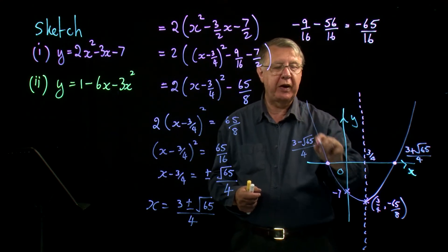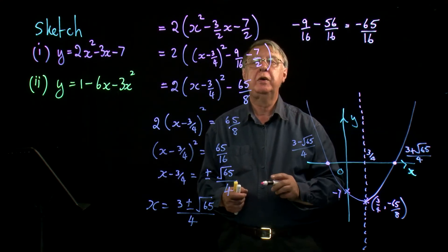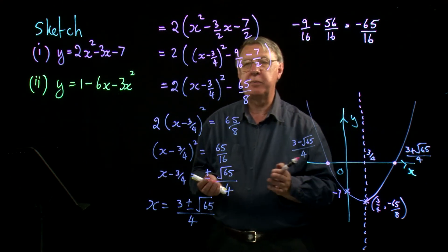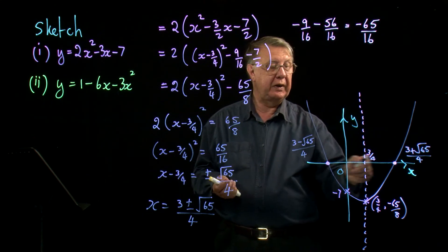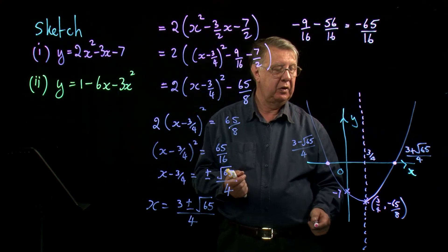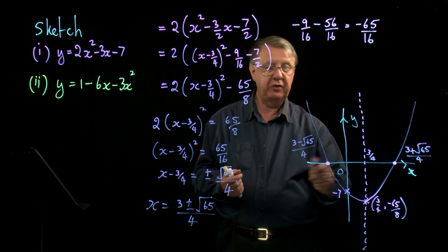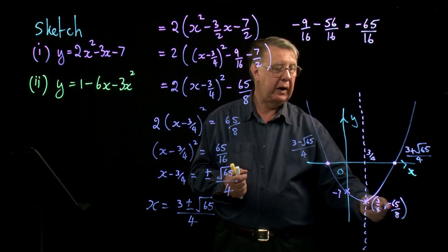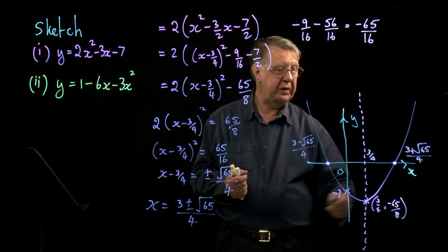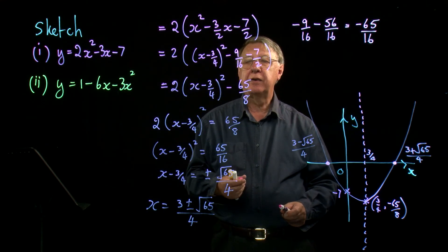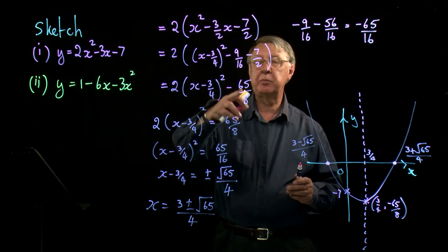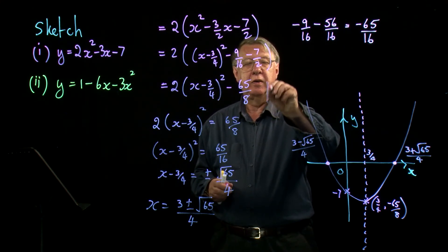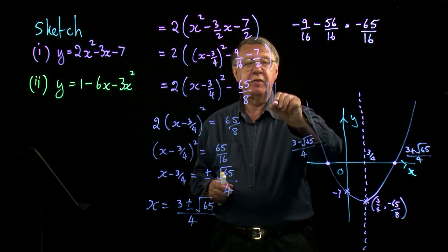So there we've got our complete sketch with all the detail that we might be asked for: the intersections with the x-axis, the intersection with the y-axis, the line of symmetry, and the lowest point. It's all come from completing the square, so this method is very, very powerful.